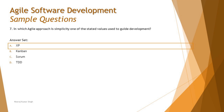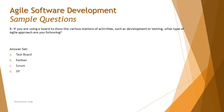We have another straightforward question. If you are using a board to show the various stations of activities — meaning statuses like To Do, In Progress, and Done — for activities such as development or testing, what type of agile approach are you following? Many people would go wrong here because a common understanding says that Scrum also uses a board.